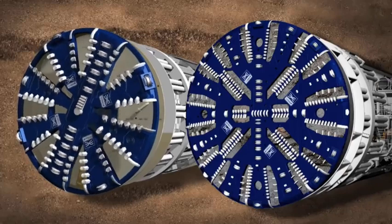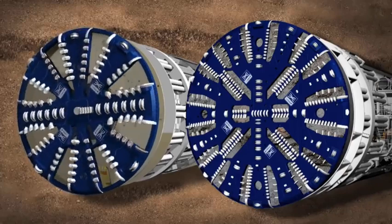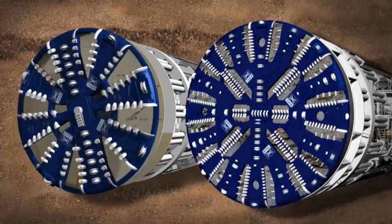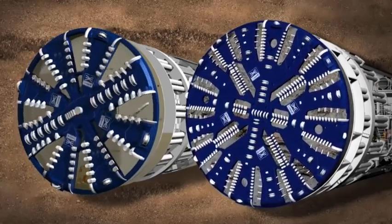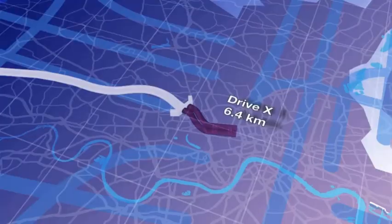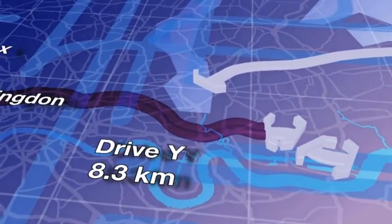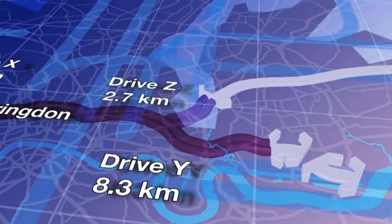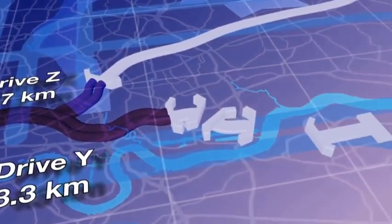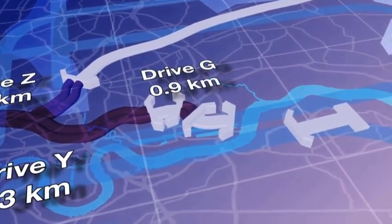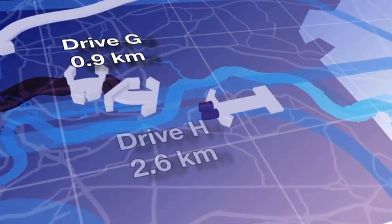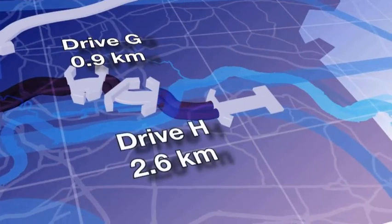There are two types of TBM being used by Crossrail: earth-pressure-balanced TBMs and mixed-shield TBMs. Six earth-pressure-balanced machines will be used for the 18 kilometers of tunnel through the clay to the west and the riverbed deposits in the east, while two mixed-shield machines will be used to drive the tunnels through the chalk beneath the river Thames.